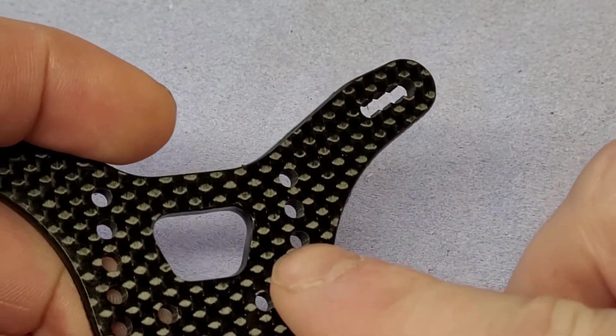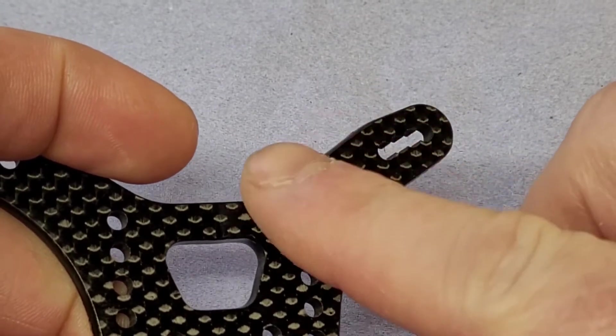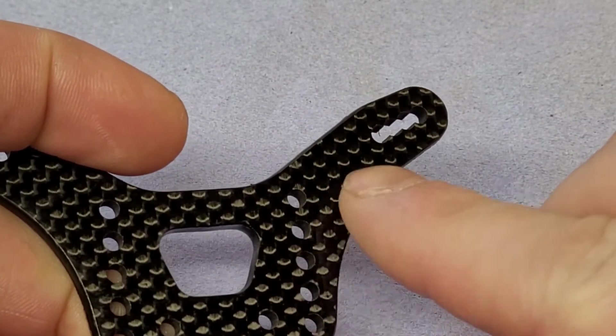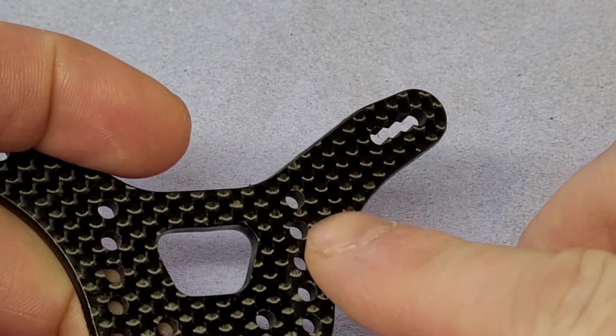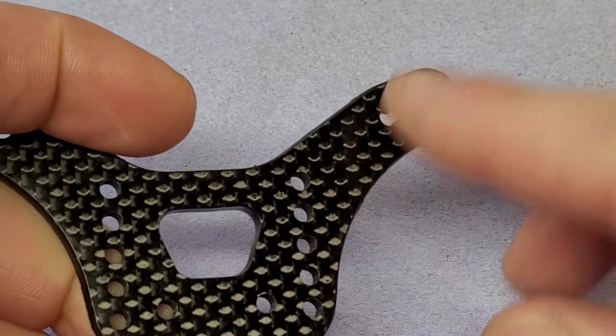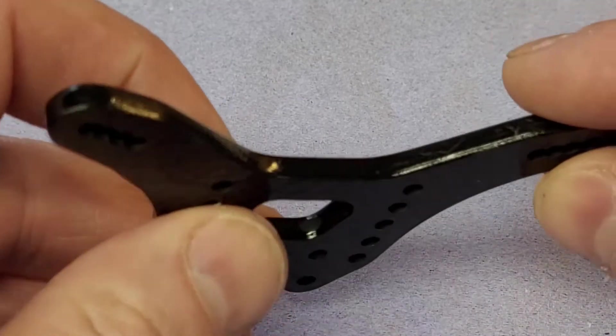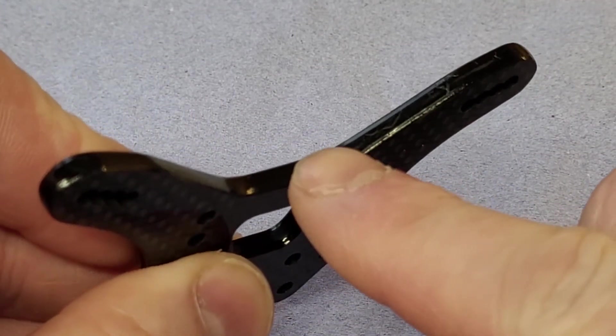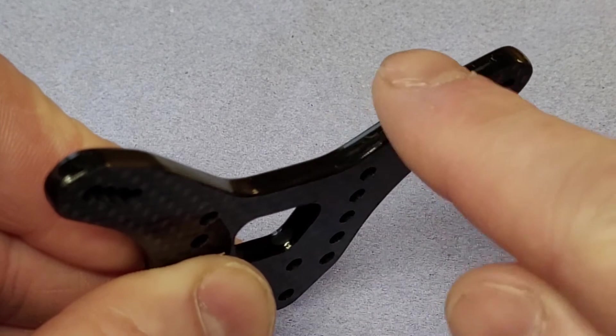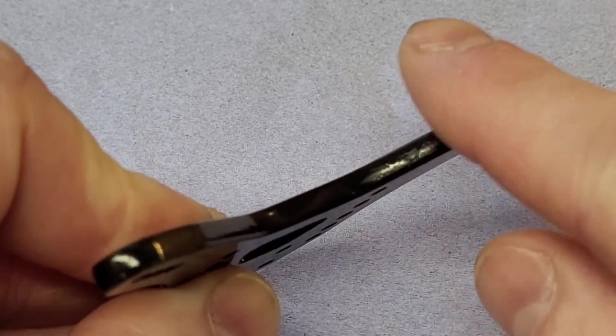If you do have any white residue on these parts, which you may have, then you can just clean that off. It might just wipe off with a cloth or even some small amount of acetone. And one thing just to be aware of: don't use any activator. I know some people use activator with super glue, but don't use any activator on this because it won't give you a very good finish.